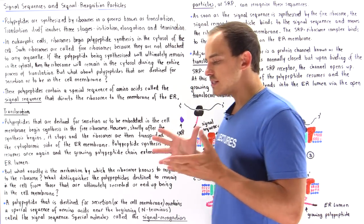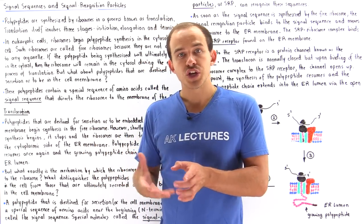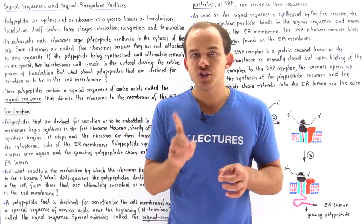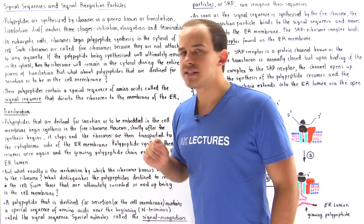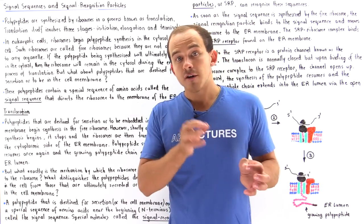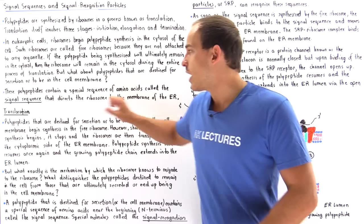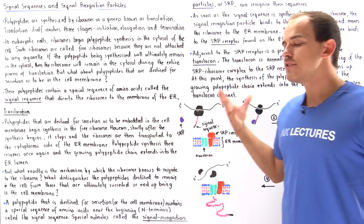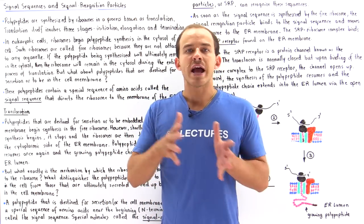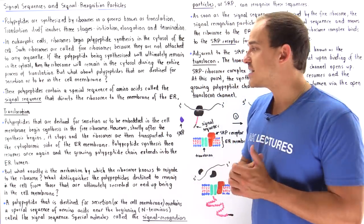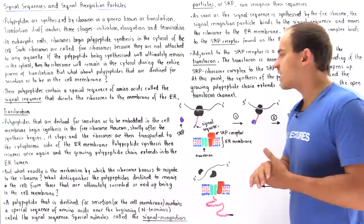The question we want to discuss is: if all polypeptides initially begin synthesis in the free ribosomes, how exactly do the free ribosomes know to attach onto the endoplasmic reticulum? Polypeptides contain a special sequence of amino acids known as the signal sequence, which directs the free ribosomes to bind onto the membrane of the endoplasmic reticulum. The process by which the growing polypeptide chain is transported from the cytoplasm onto the ER membrane along with the ribosome is known as translocation.